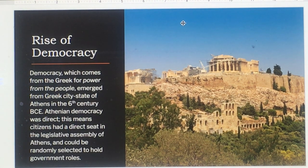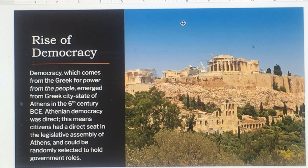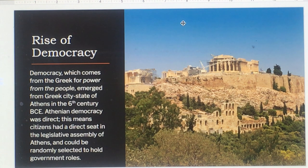Democracy, which comes from the Greek word for power from the people, emerged from the city-state of Athens in the sixth century BCE. Athenian democracy was direct — this means citizens had a direct seat in the legislative assembly of Athens and could be randomly selected to hold government roles.